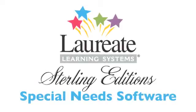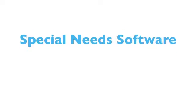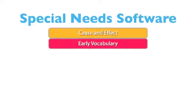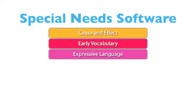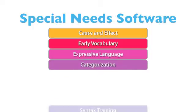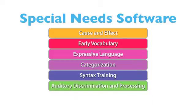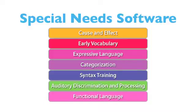Laureate's Sterling Editions include a wide range of programs in the areas of cause and effect, early vocabulary, expressive language, categorization, syntax training, auditory discrimination and processing, and functional language.